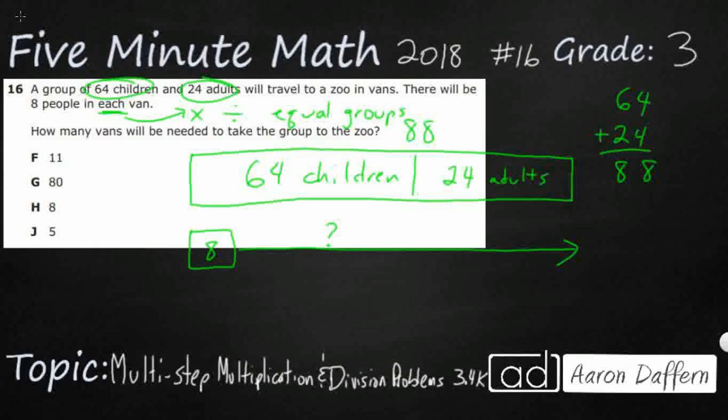So I say multiplication or division because what we can do is we can say, well, 88 divided into vans of eight is going to make how many vans? Well, that's the question. Or we could say blank number of vans of eight is going to make 88. So we can either think of a multiplication fact or a division fact.